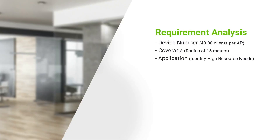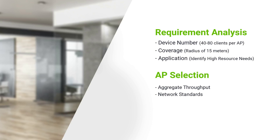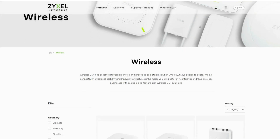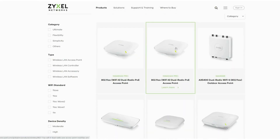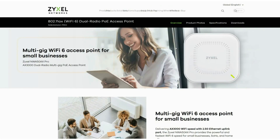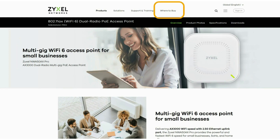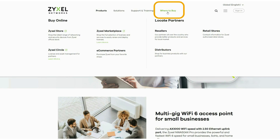Today, we have learned how to analyze our own needs from several dimensions and use them to choose the right access point for our requirements. This will help you make informed decisions when faced with different product specifications. By making informed choices based on these factors, you can ensure a reliable and efficient network environment. Zeisel offers a wide range of products — visit our official website to make your selection, where the specs mentioned above are clearly noted. For purchasing information, check the 'Where to Buy' link in the top menu bar.